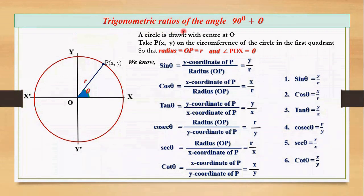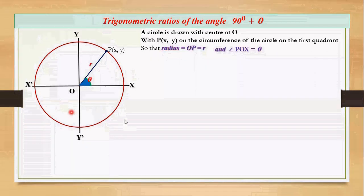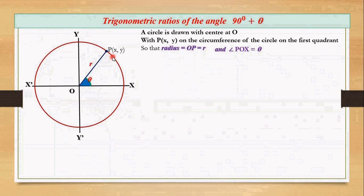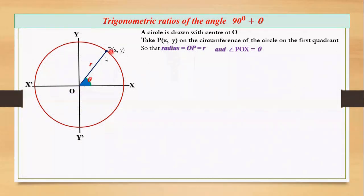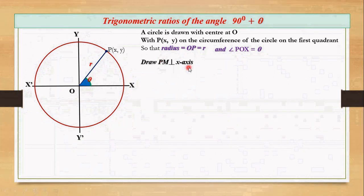Now we are going to find the trigonometric ratios of the angle 90 degree plus theta. For that we need some construction. Students, we are going to do this on page number two. This is the figure from our first page, where P(x, y) is the point, O is the center, OP is the radius, and angle POX equals theta. Now let's draw PM perpendicular to the x axis.